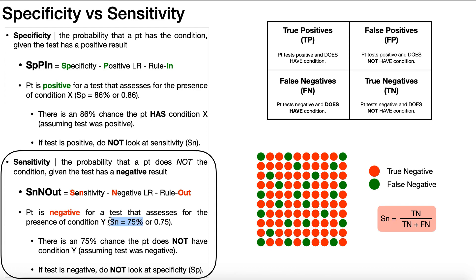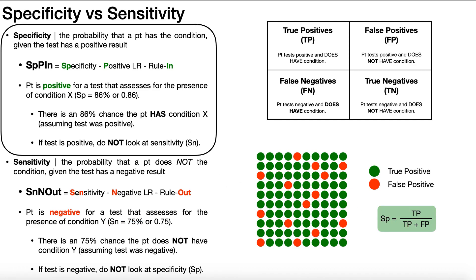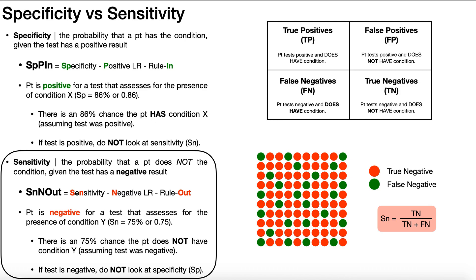So the bottom line: if you get a positive result, look at the specificity — that gives you the probability you'll be able to rule in the condition. If you get a negative result, look at the sensitivity value — that gives you the probability you'll be able to rule out the condition, assuming the test result was negative.